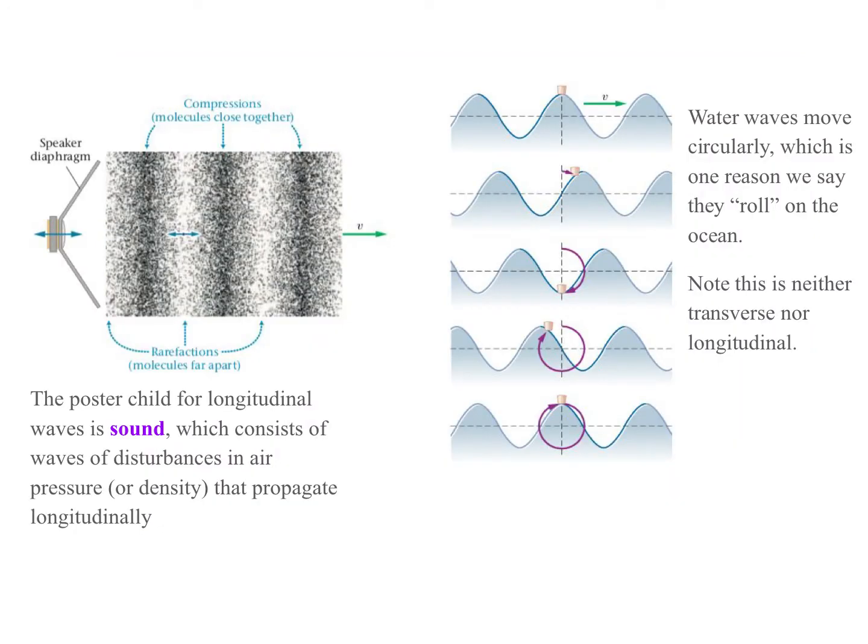As I said before, the poster child for longitudinal waves is sound, which consists of waves of disturbance in air pressure or equivalent in density, and that propagate longitudinally. The basic idea here being, of course, like the speaker is a diaphragm that, say, moves this way and creates regions of low pressure, so the air flows into it, and then comes back and compresses it, pushes it together and creates regions of high pressure.